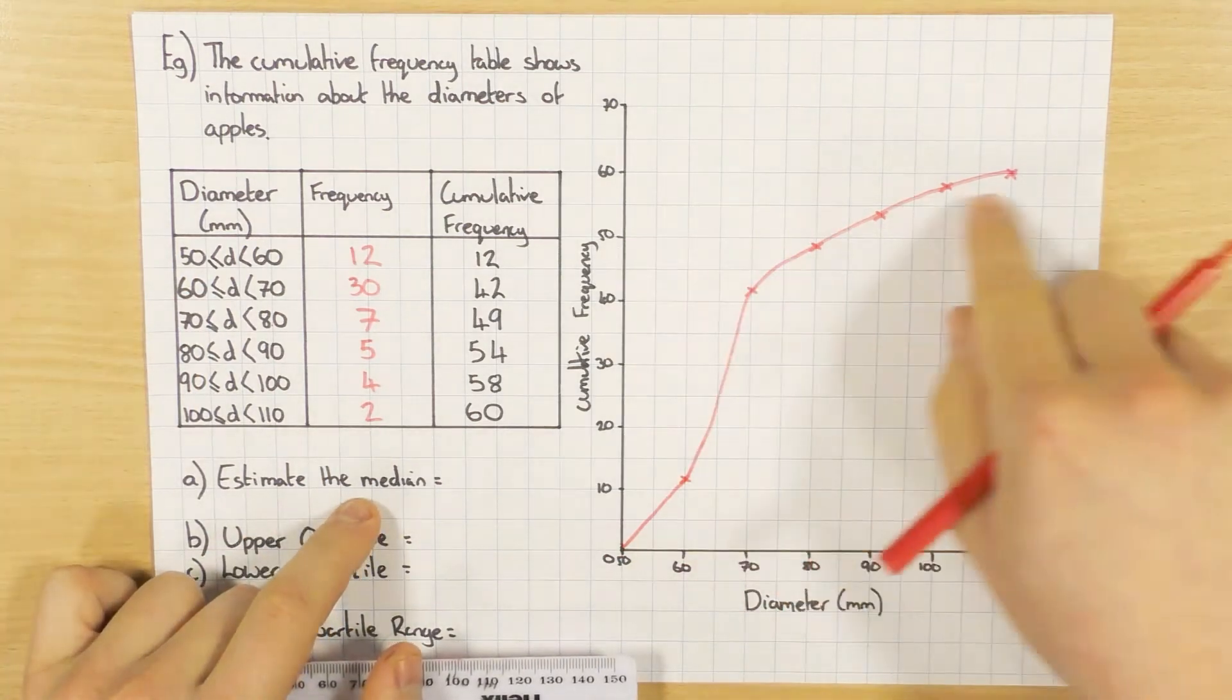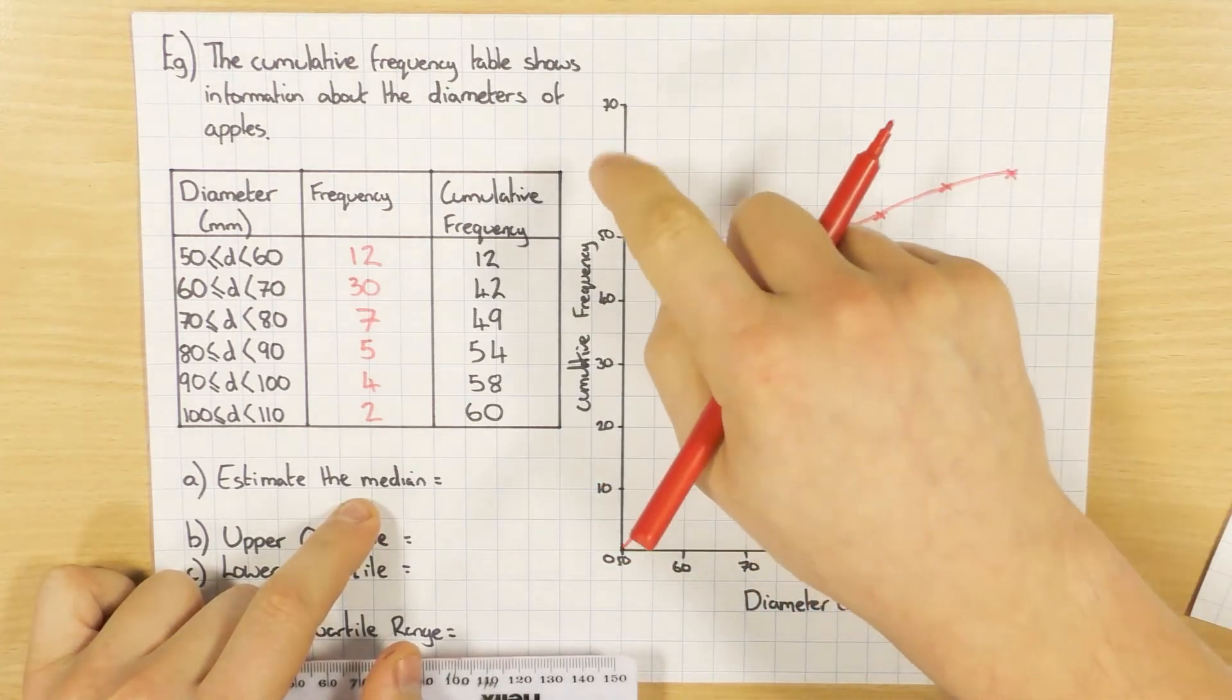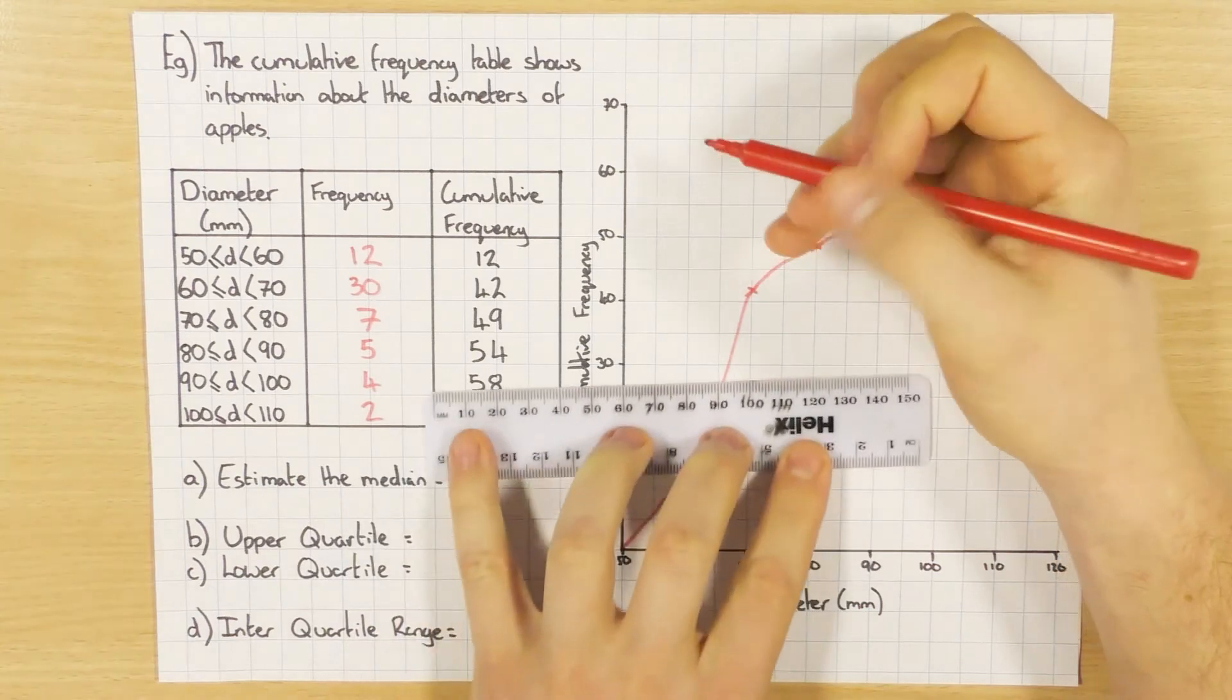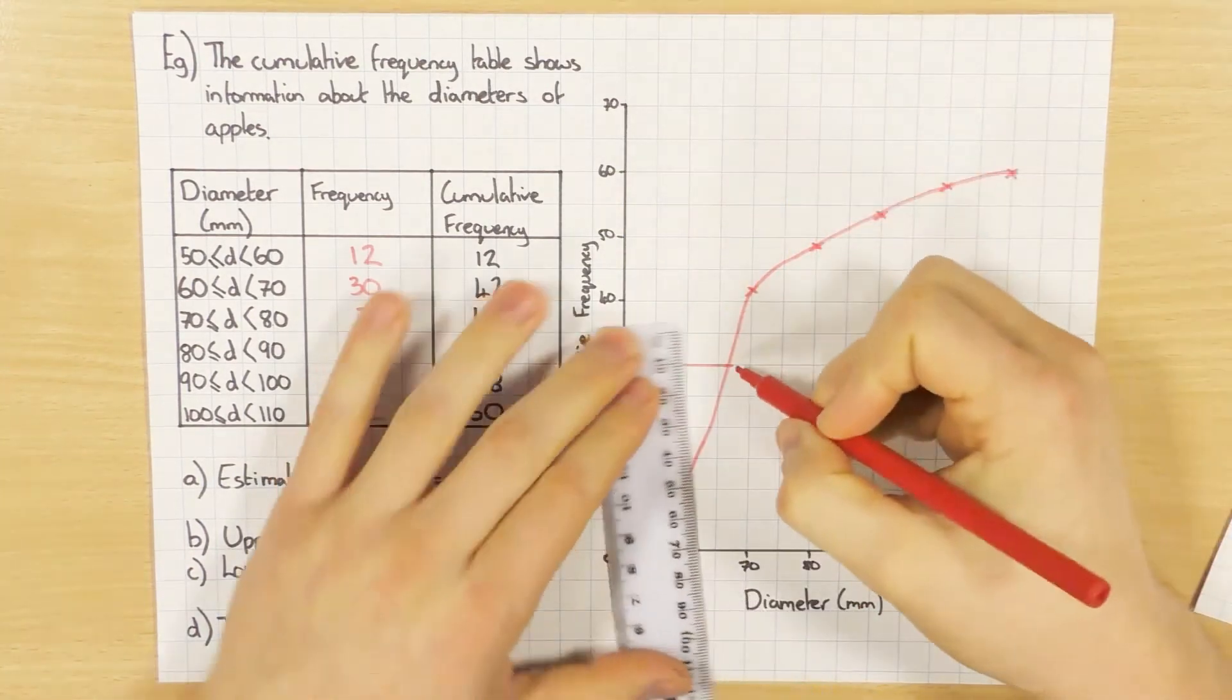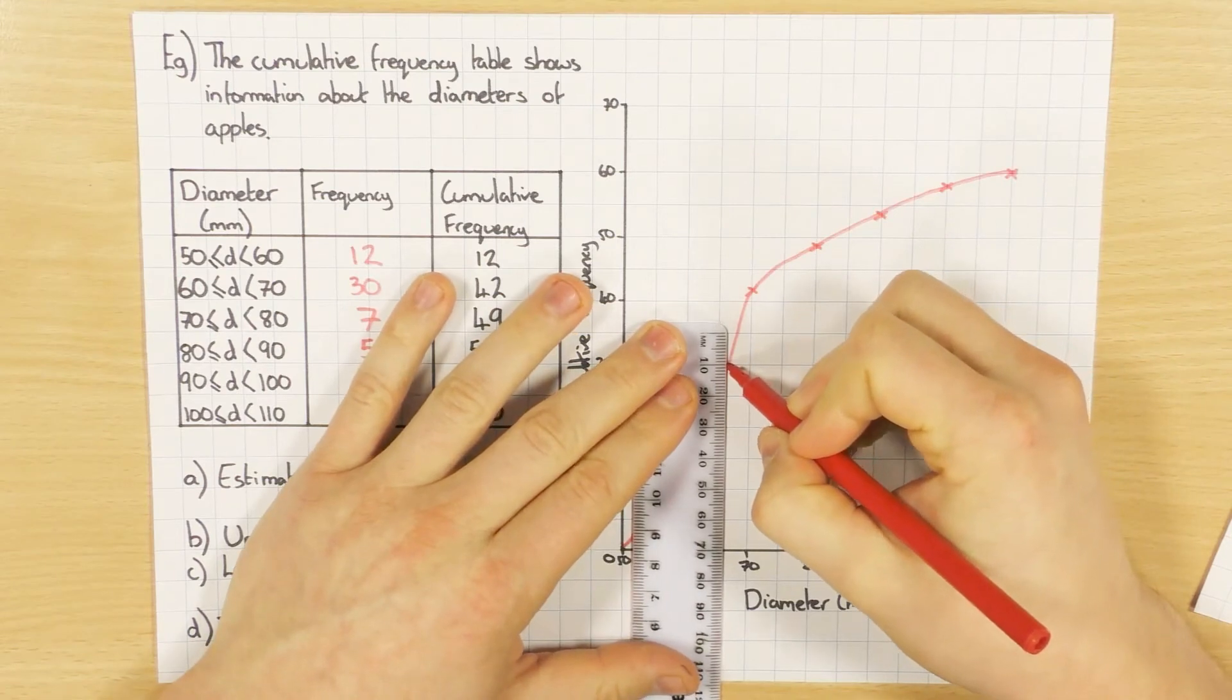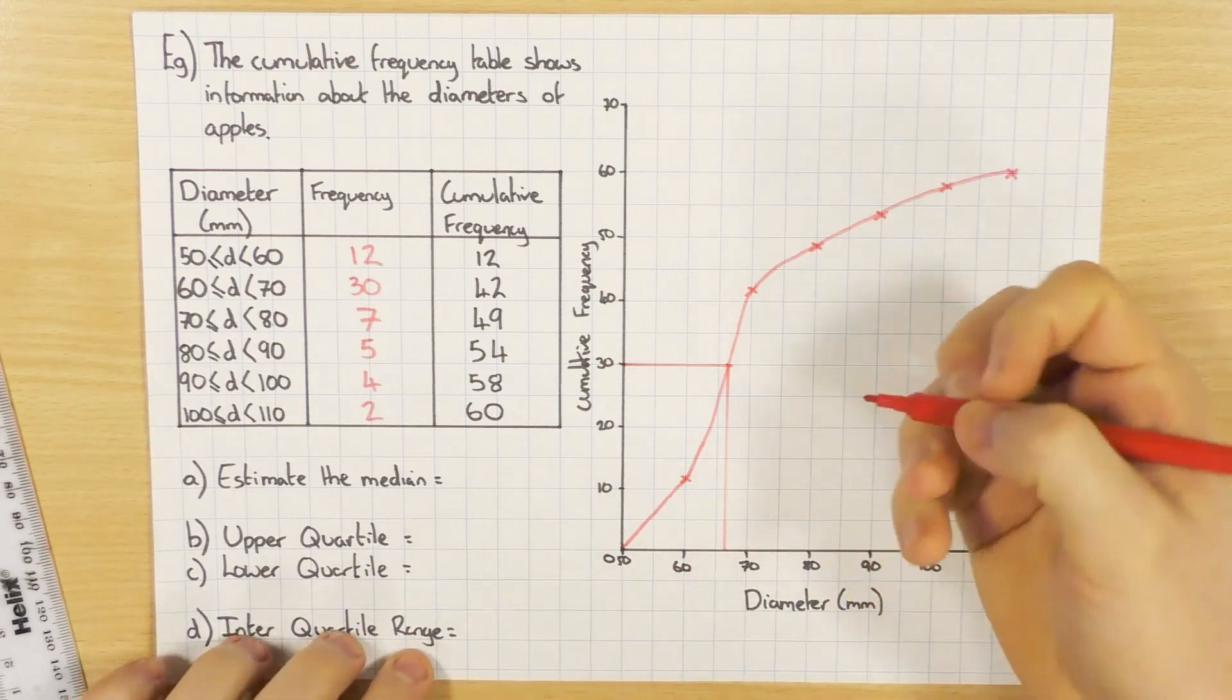And the rest of it was the same as before, so estimate the median. So again, if the total is 60, not to be confused with 70, the total is 60, what's half of 60? It's 30. So I go from 30 to my curve. And I go down, so that's about 67. Again, this would be much easier if you had graph paper.